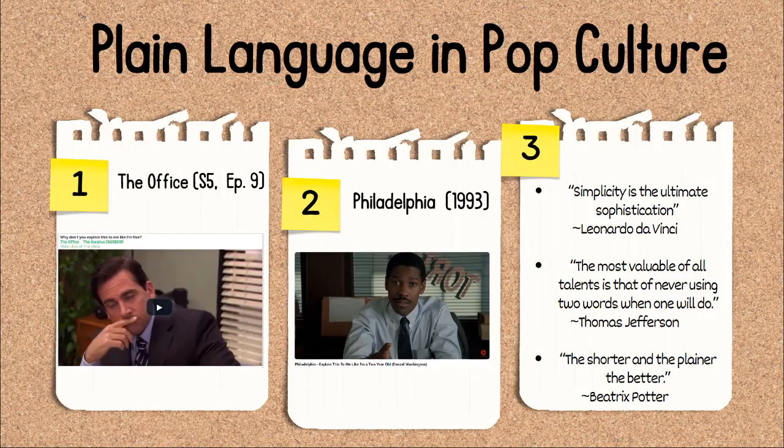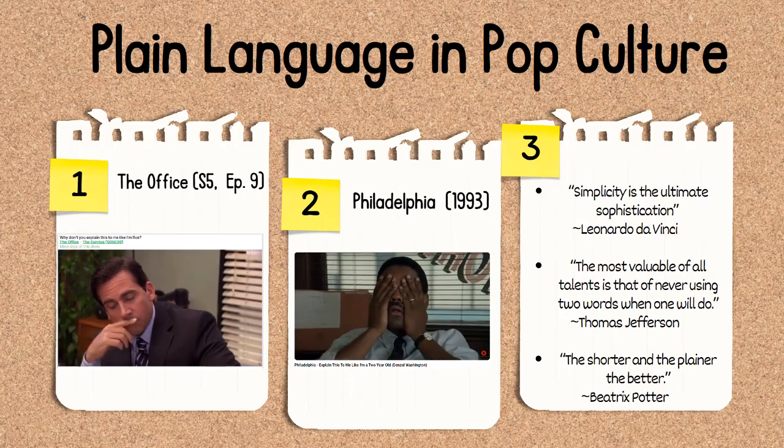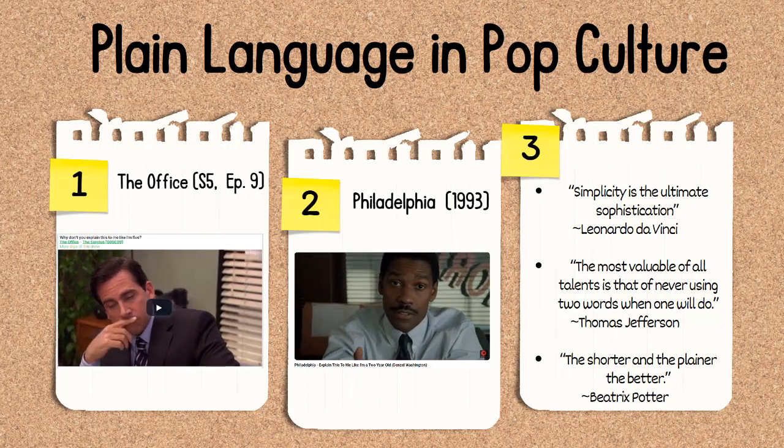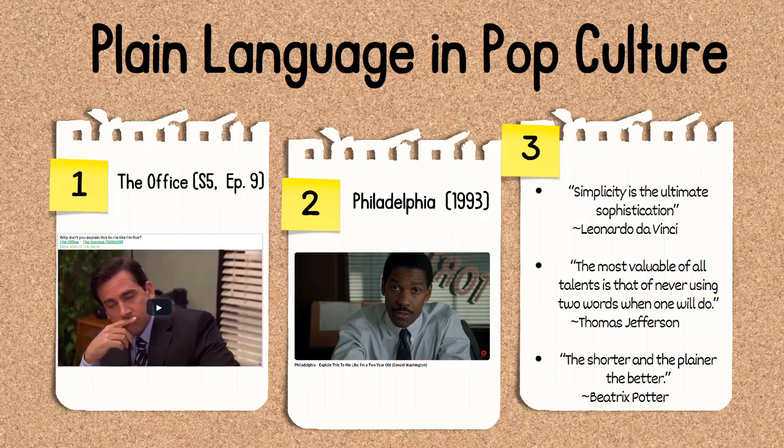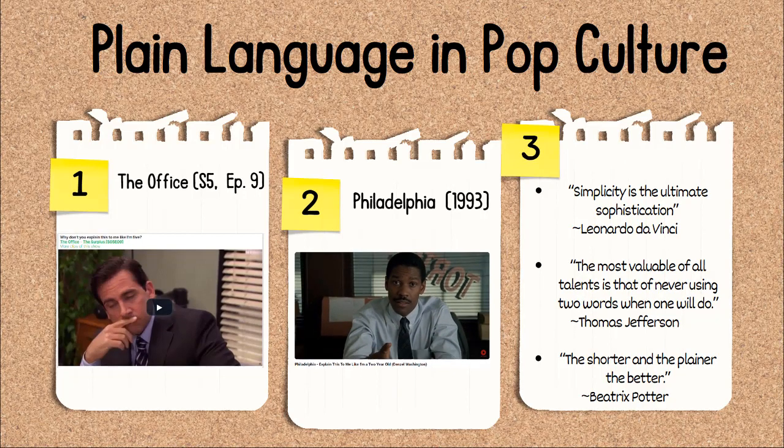Plain language pops up in pop culture. Here are several examples of people receiving complicated information and requesting a more plain language version — often phrased as asking to explain it like they were a child. The first clip is from The Office with Michael Scott played by Steve Carell. The second is from the 1993 movie Philadelphia with Denzel Washington as lawyer Joe Miller. These quotes show that the yearning for plain language and the strive for simplification has been prevalent in pop culture for a long time.